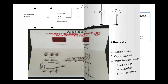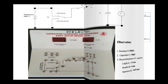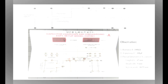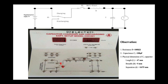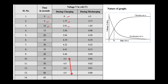Once 4.5 volts is reached, immediately use the toggle button to shift from charging mode to discharging mode by moving it downward. At the same time, press the reset button to reset the timer. The capacitor will then start to decrease in voltage.